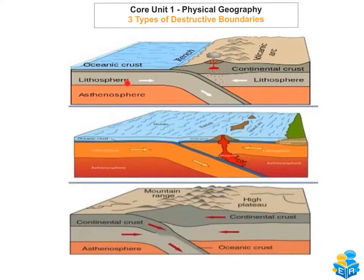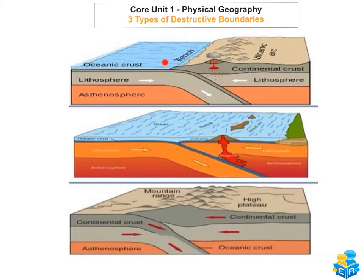The first type is an oceanic and a continental crust. An example of this is the Nazca plate and the South American plate. When these two plates collide, the heavier oceanic crust always subducts — it always sinks below the continental plate into the asthenosphere, and it can sink up to 100 kilometers in depth.